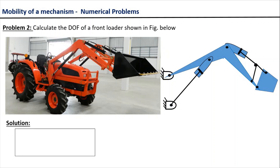Now let us try to map the elements of the actual system with that of the kinematic diagram. The fixed links in the kinematic diagram basically represent the frame of the excavator. The black solid line along with this particular link represents the hydraulic actuator of the excavator, which simply consists of a piston rod and a cylinder arrangement. This particular link is represented by the boom of the excavator.